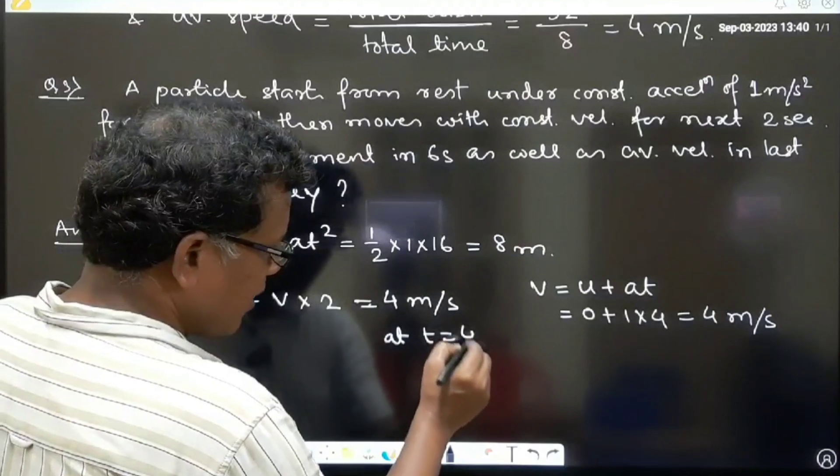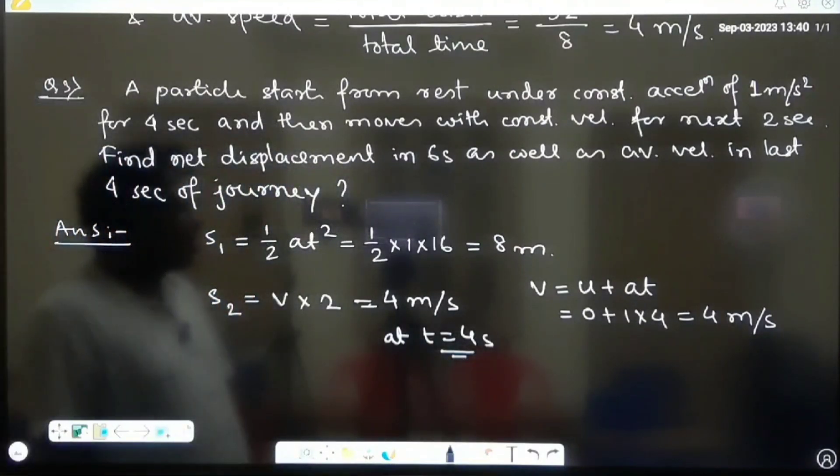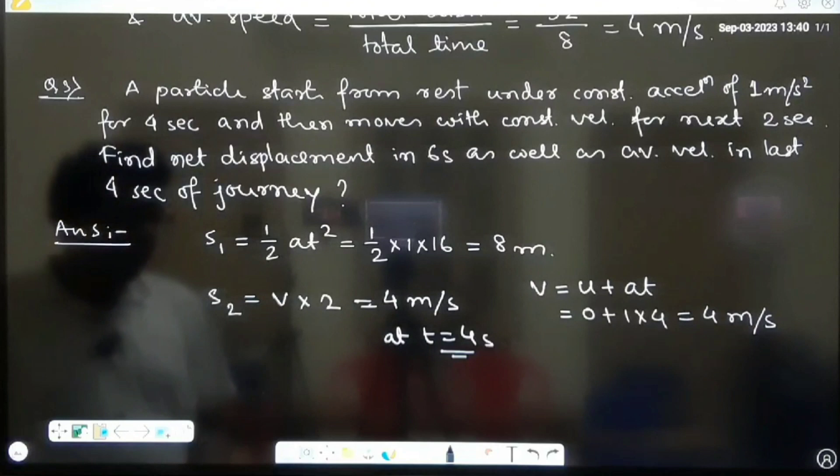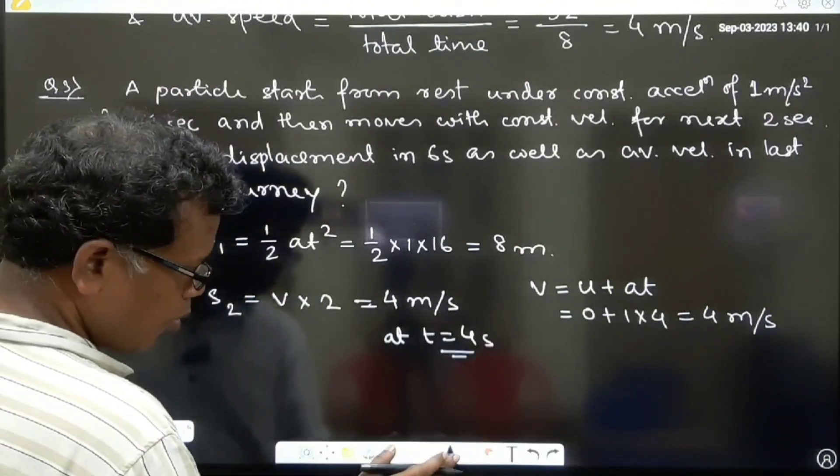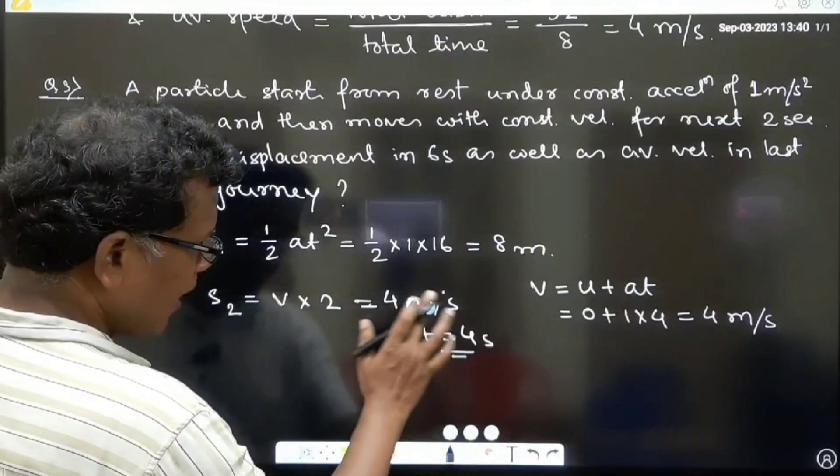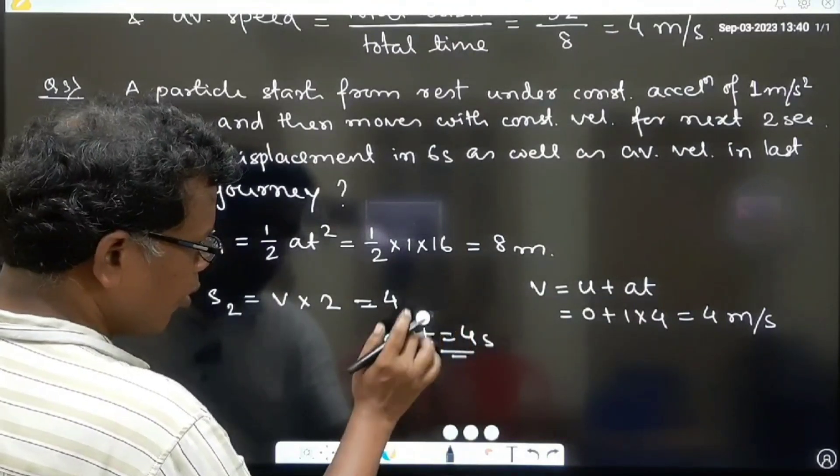So this velocity is used during the last 2 seconds. That's why it is 4 into 2.